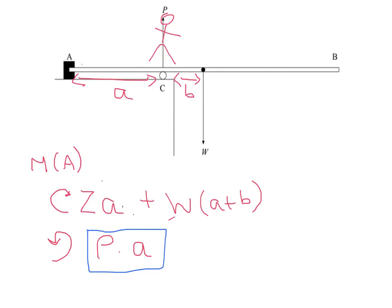So A obviously hasn't changed because it's the same distance, which must mean that P is getting bigger. So let's do one final move along. Let's make them walk all the way to the end, as if they were going to dive off the diving board.